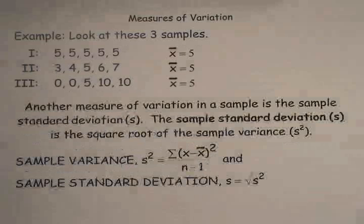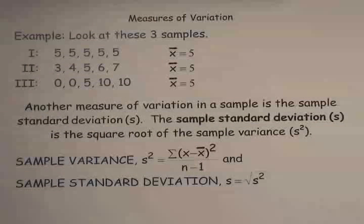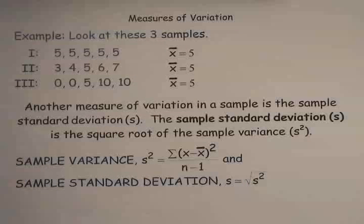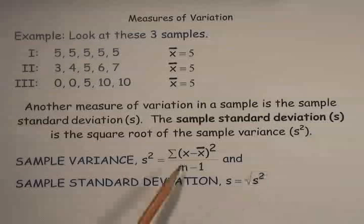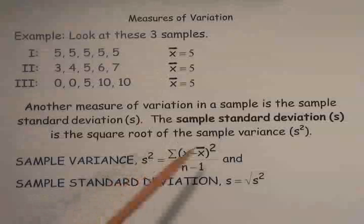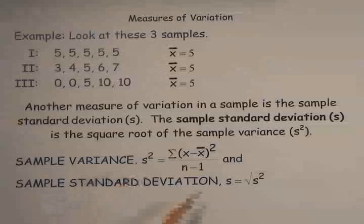That second measure of variation in a sample is called the sample standard deviation, and we're going to use the letter S for it. The sample standard deviation is the square root of something we call the sample variance. So S² refers to the variance, and S is the square root of the sample variance. When doing a lot of calculations, putting square roots over a fraction is inconvenient, so my preference is to first calculate S², then take the square root at the end as a matter of convenience.